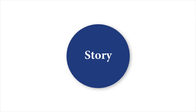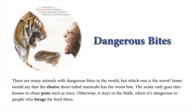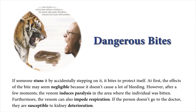Dangerous Bites. There are many animals with dangerous bites in the world, but which one is the worst? Some would say that the elusive short-tailed mamushi has the worst bite. The snake only goes into homes to chase pests such as mice; otherwise, it stays in the fields where it's dangerous to people who forage for food there. If someone stuns it by accidentally stepping on it, it bites to protect itself. At first, the effects of the bite may seem negligible because it doesn't cause a lot of bleeding. However, after a few moments, the venom induces paralysis in the area where the individual was bitten. Furthermore, the venom can also impede respiration. If the person doesn't go to the doctor, they are susceptible to kidney deterioration.